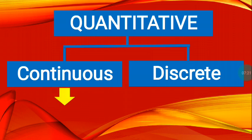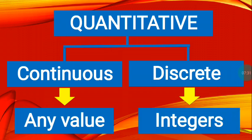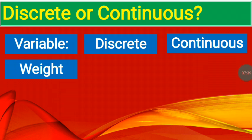What is continuous? For continuous, it talks about any value. For discrete, it talks about integers. So, let's try to look at the example.